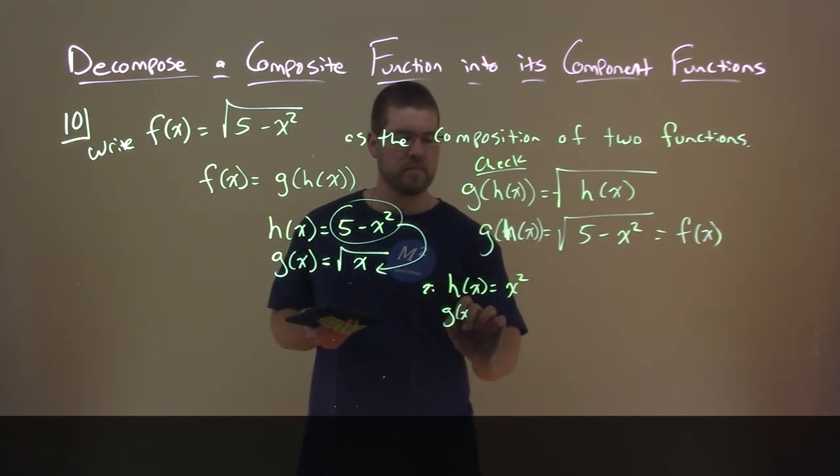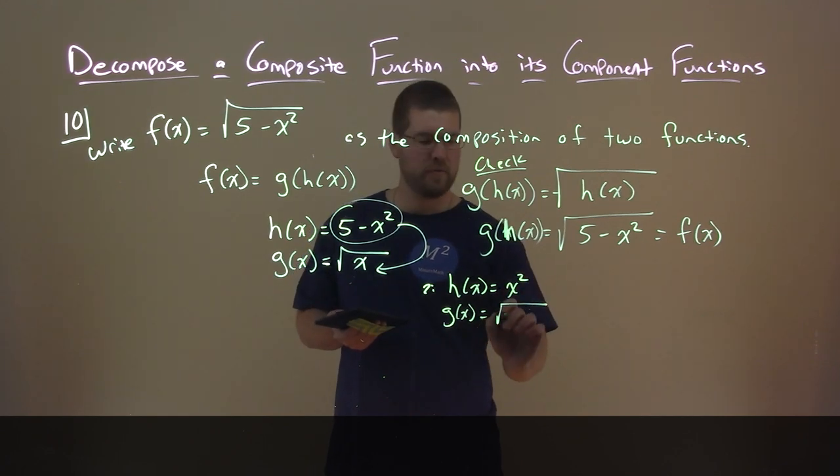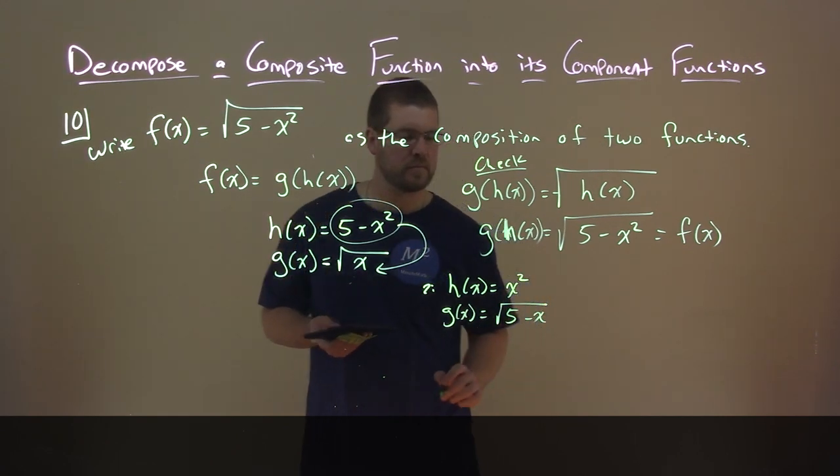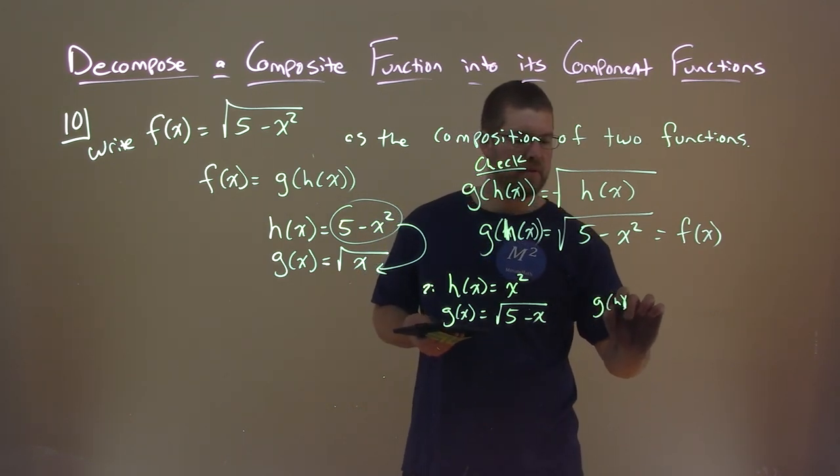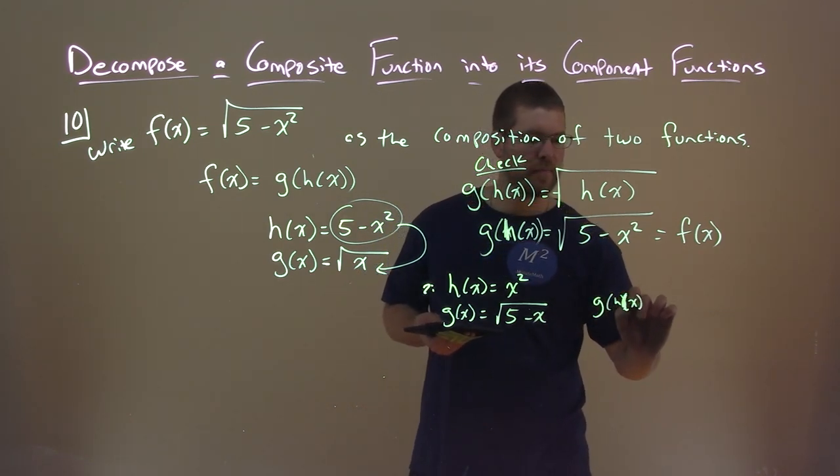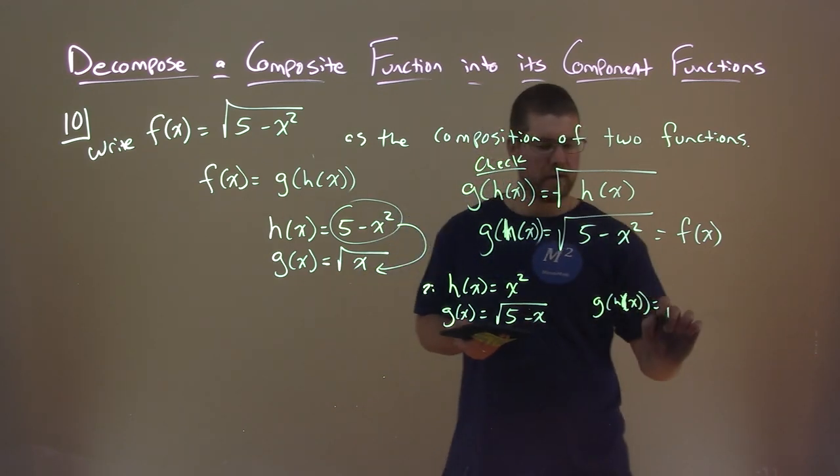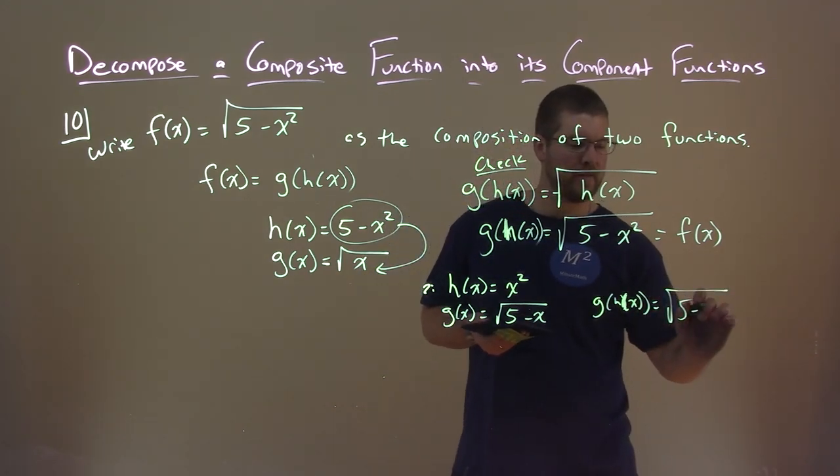And g of x is the square root of 5 minus x. So g of h of x here is, well g of x is the square root of 5 minus x.